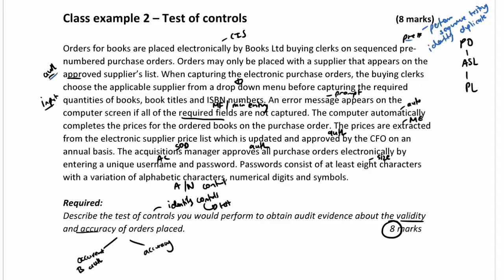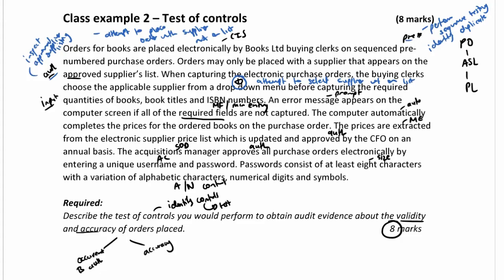The next control is the approved supplier listing. We can go and inspect that an approved supplier listing exists. Since orders can only be placed from that listing, we can also attempt to place an order with a supplier not on the list — and we should not be allowed to. There are a couple of procedures to test one control. With the drop-down arrow, we can attempt to select a supplier not on the list and confirm we are not allowed to.